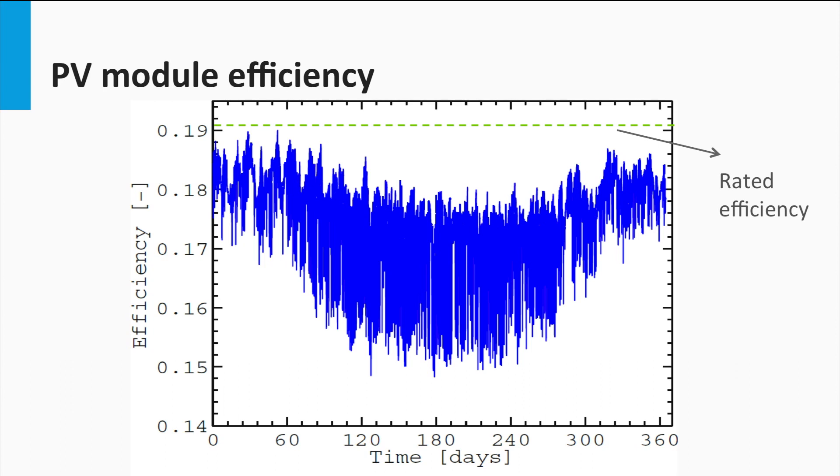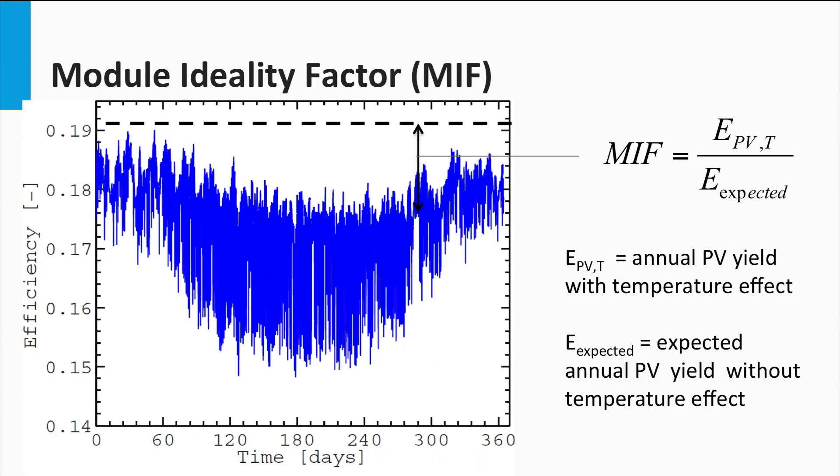The PV module considered here was a commercial polycrystalline module and the module's parameters were taken from the manufacturer's datasheet. The difference between the expected PV yield with rated efficiency and the actual yield due to the temperature effect gives rise to a module ideality factor. This is nothing but the ratio of the expected PV yield actually available, taking into account the temperature effects. If the module ideality factor is 80%, that means that the module has lost 20% of its annual energy yield due to temperature effects. If the module ideality factor is 100%, that means the module is immune to temperature changes.